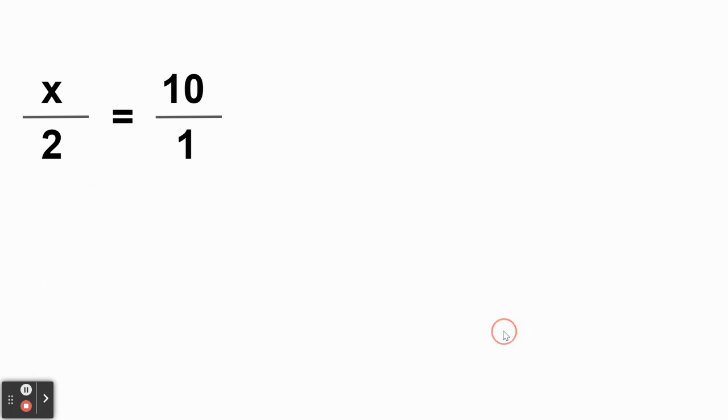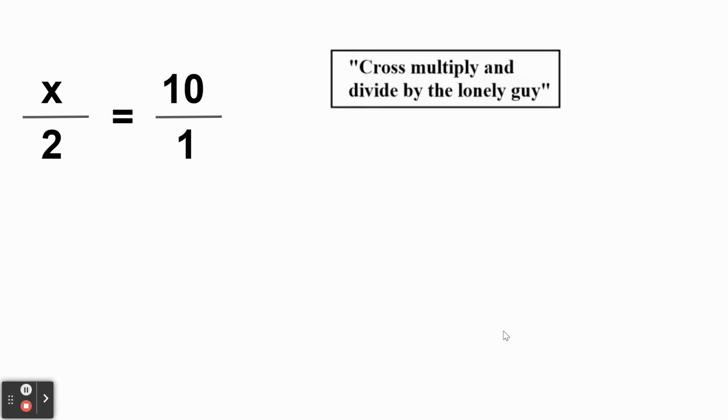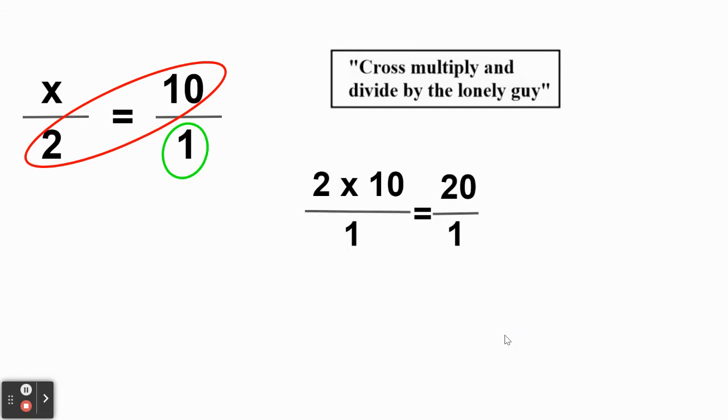Or, don't forget, what do we got? If we go back to this, we've got our buddy cross-multiply and divide by the lonely guy. So let's do a cross-multiply. 2 times 10. And there's our lonely guy, number 1. Can you see we get the same answer? 2 times 10 divided by 1. 20 divided by 1. Answer, x is 20.